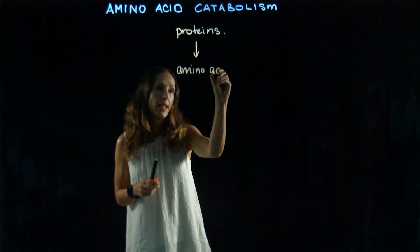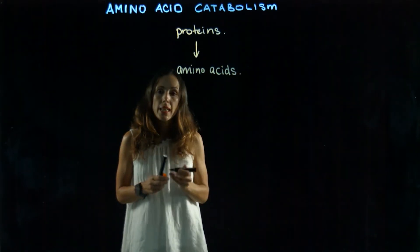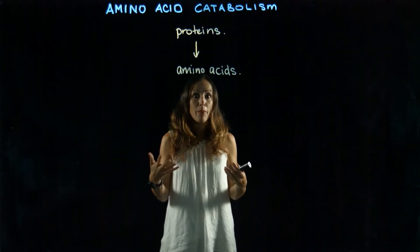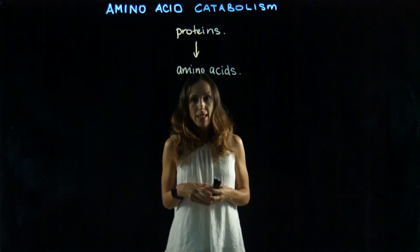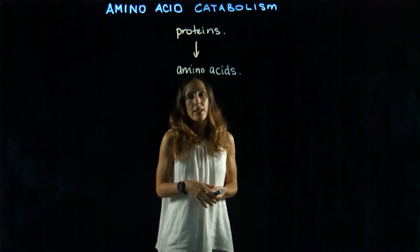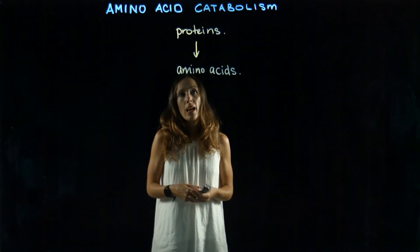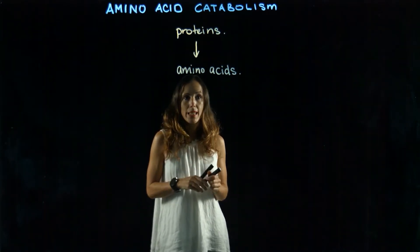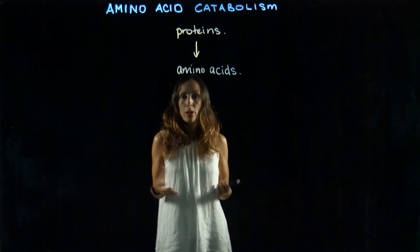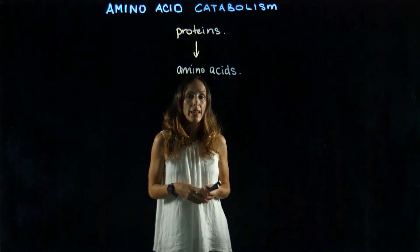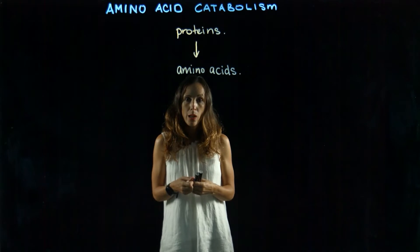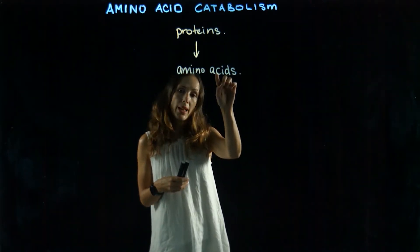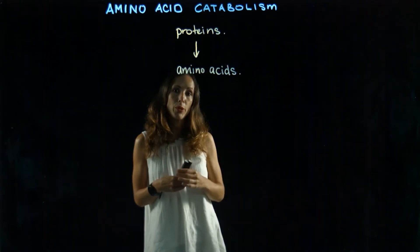The interesting thing about amino acids is that we can't store them. Our proteins and amino acids are not like fats, where we can store them as TAGs in the body, and it's not like glucose that we can store as glycogen. We don't have a way to store amino acids. So our intake of amino acids needed as building blocks for new proteins either comes from the food we take in through our diet, or from the breakdown of proteins into amino acids that can then be used to build new proteins.